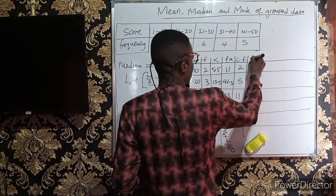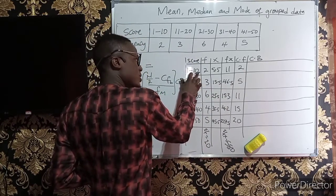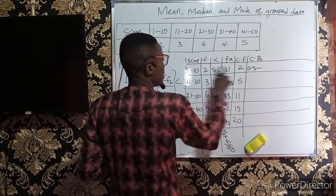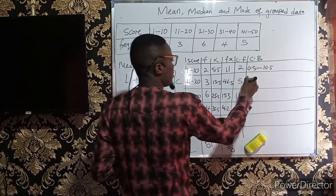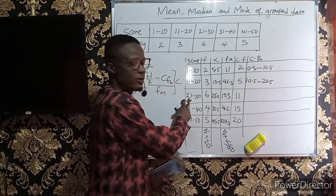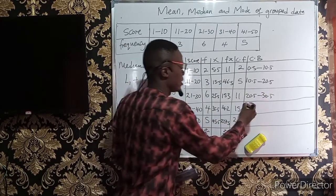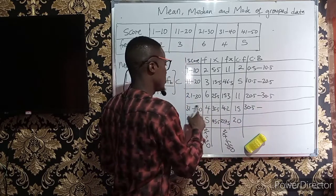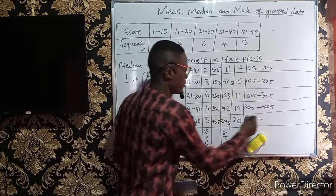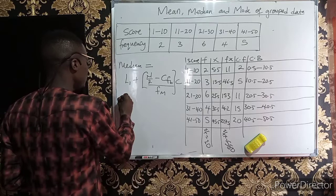Next we need the class boundaries. To get class boundaries, subtract 0.5 from the lower class interval and add 0.5 to the upper. So: 1−0.5 = 0.5 to 10+0.5 = 10.5; then 10.5 to 20.5; then 20.5 to 30.5; then 30.5 to 40.5; and finally 40.5 to 50.5.